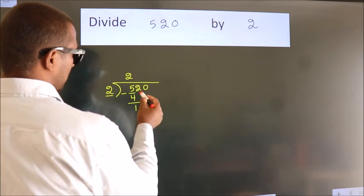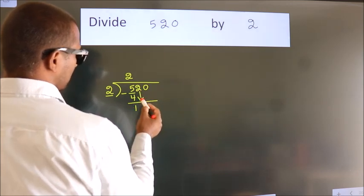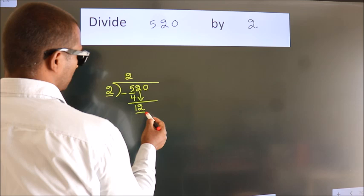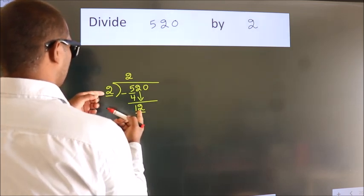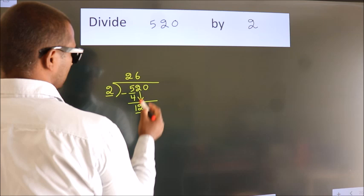After this, bring down the beside number. So, 2 down. So, 12. When do we get 12? In 2 table, 2 times 6, 12.